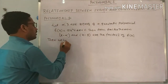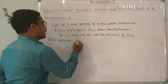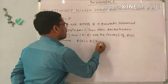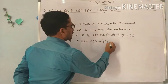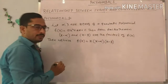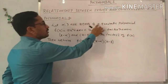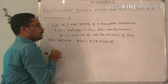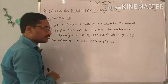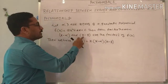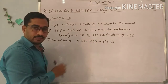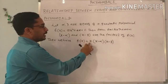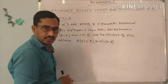Then we have F of X written as K into X minus alpha into X minus beta. So if alpha comma beta are the zeros of a quadratic polynomial F of X equal to AX squared plus BX plus C, then from the factor theorem, X minus alpha and X minus beta are the factors of F of X, and F of X equals K into X minus alpha into X minus beta.